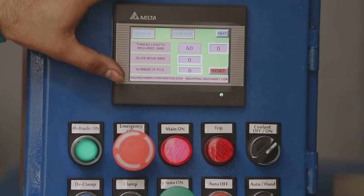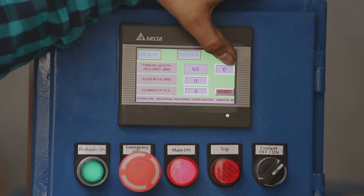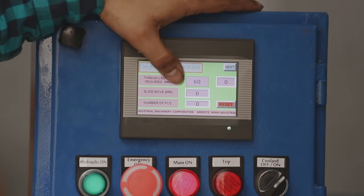Thread length is 60 mm in this machine. The current position of the machine is shown here. Now the machine is in the home position, that's why it shows zero.